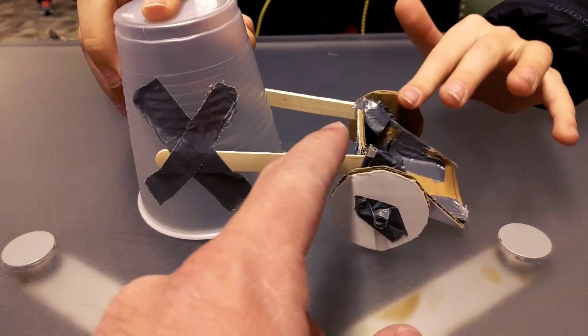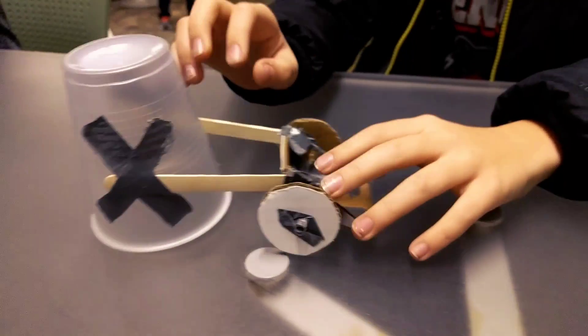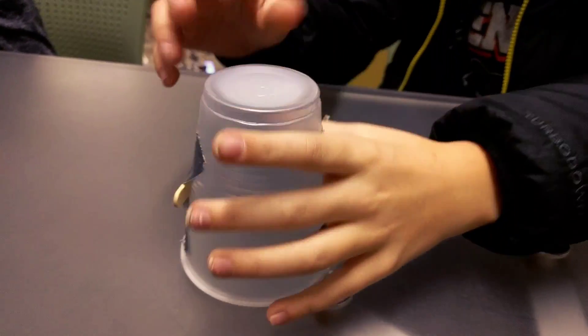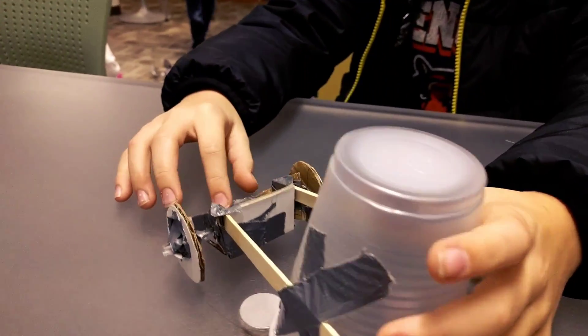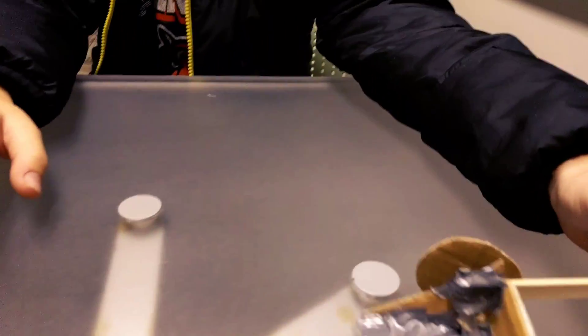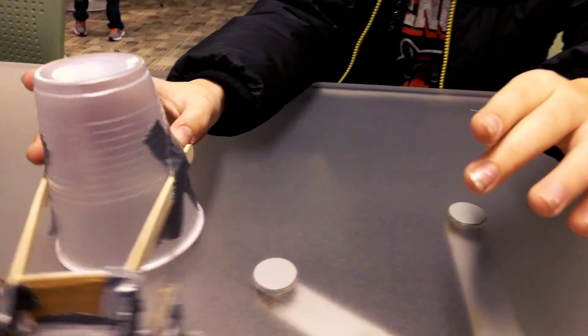So these are supposed to be the wheels? Wheels. Like this is a front-end horse. Dude, that's pretty cool. Alright.